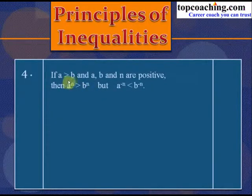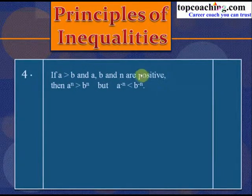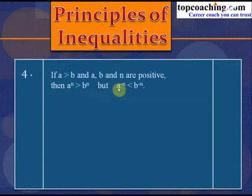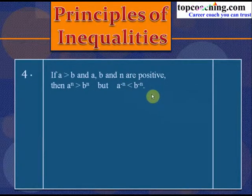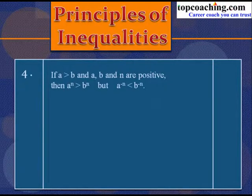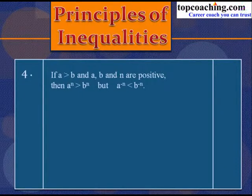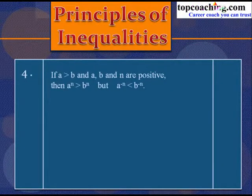The next principle: if a > b and a, b, and n are all positive numbers, then aⁿ > bⁿ, but a⁻ⁿ < b⁻ⁿ.